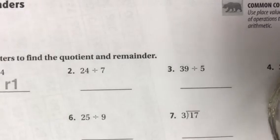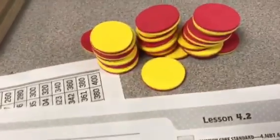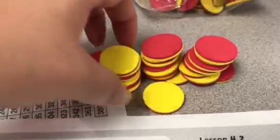The way we did it in class, and one of the easiest ways to do that, is using math counters. I have 24 right here. So I'm going to put them into groups that have 7 in each group.